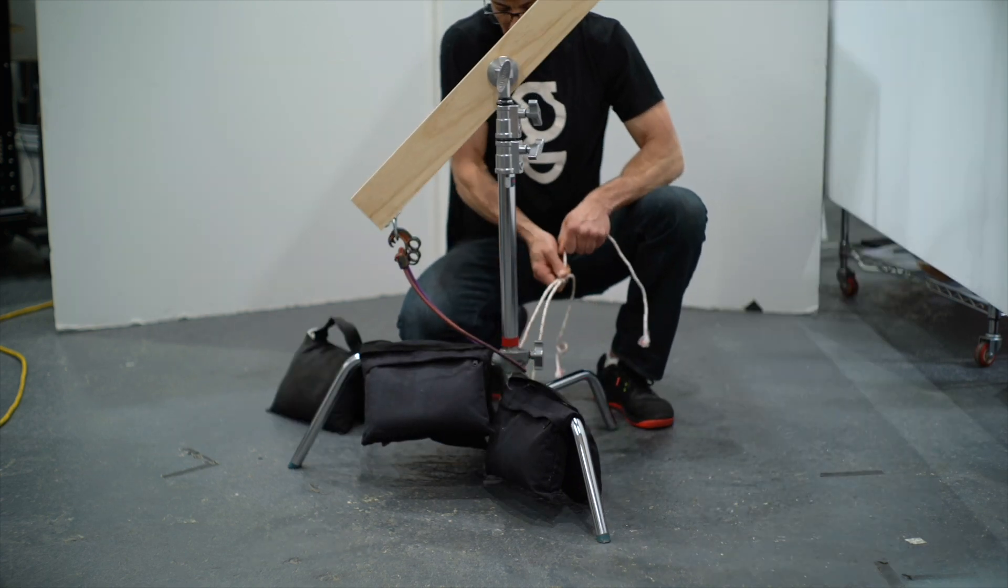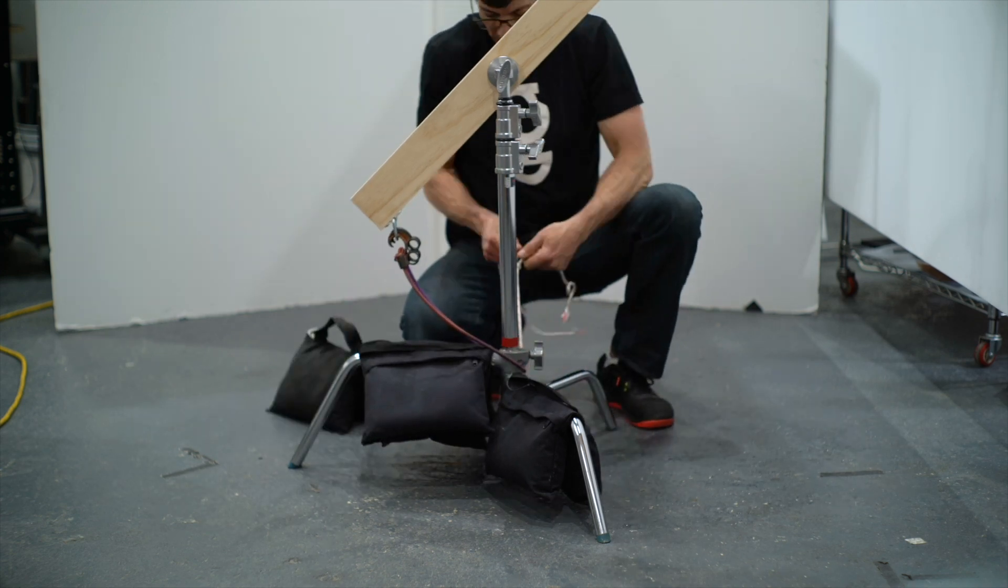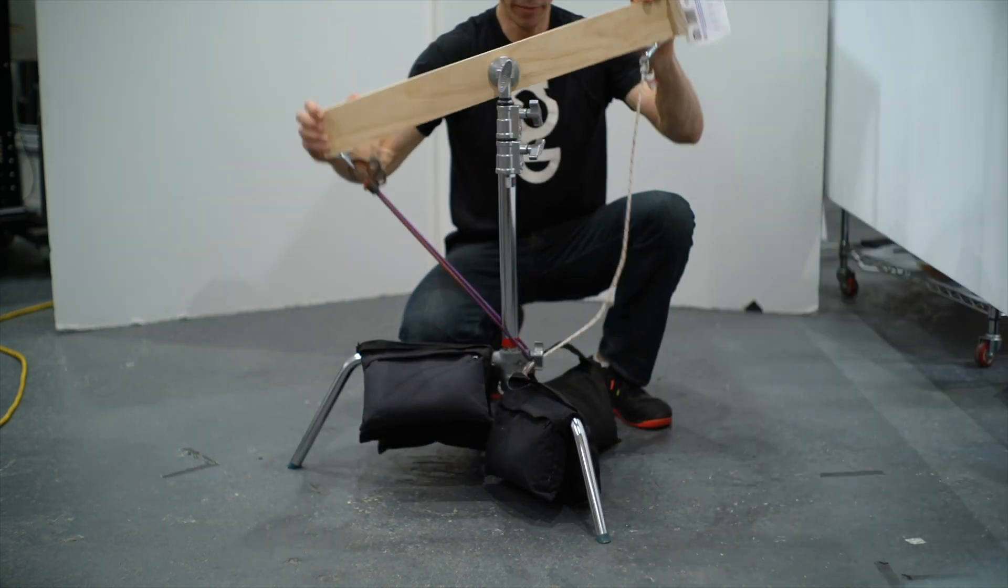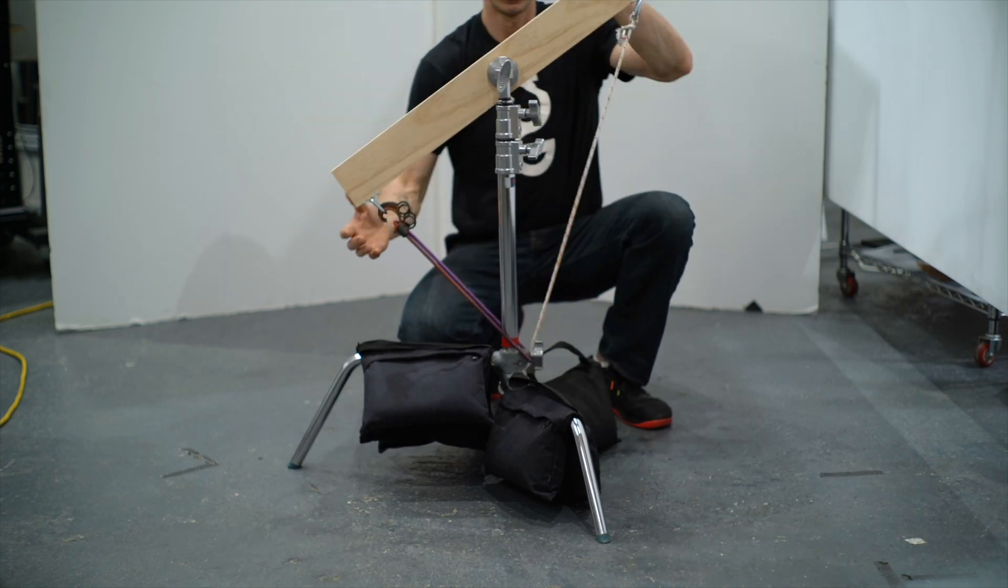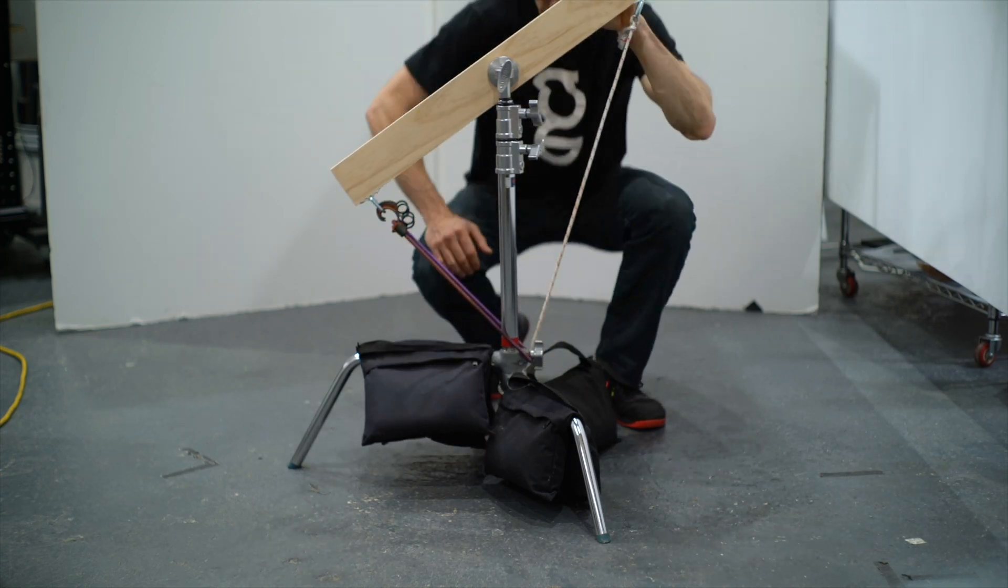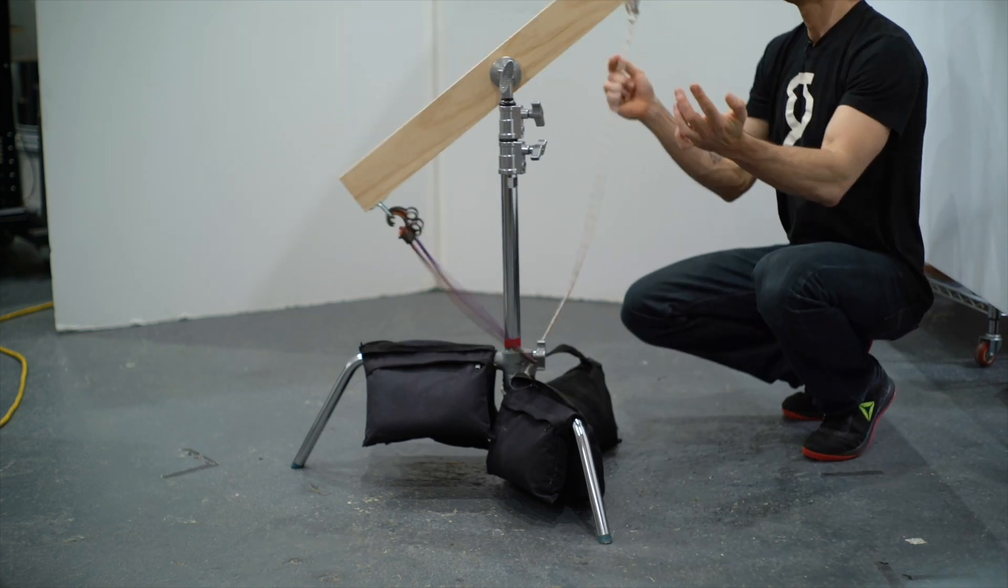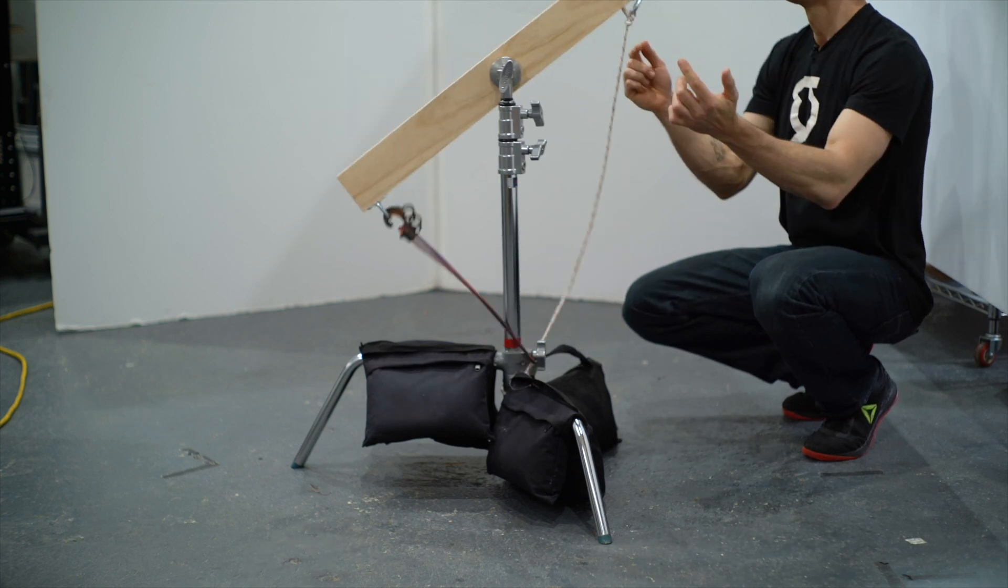So to stop this catapult, I'm tying a rope to the c-stand at the base and then tying off the other end to the bucket end of the catapult arm. So that way you can pull a lot of tension, then release, and it'll stop. You can see that it stops at the same point every time.